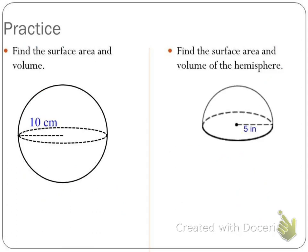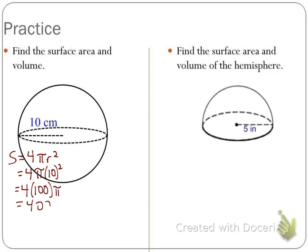Let's look at two more examples. First, we'll find the surface area and volume of a sphere with radius 10 centimeters — you can pause and try it yourself. Surface area is 4πr², so 4π times 10 squared, giving 4 times 100π, which comes out to 400π centimeters squared.